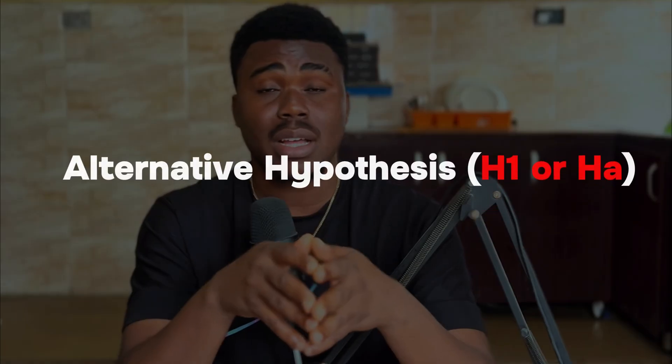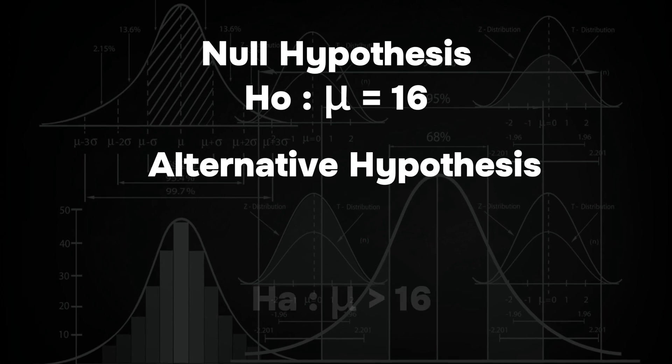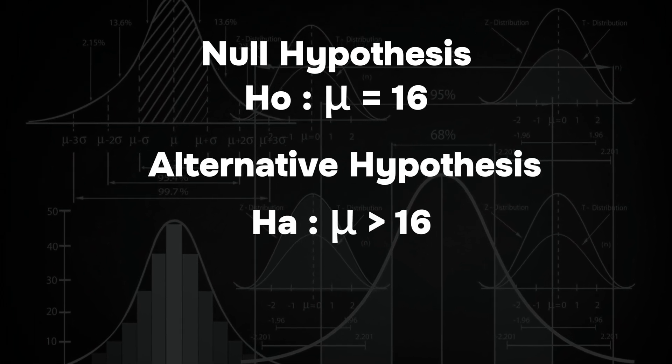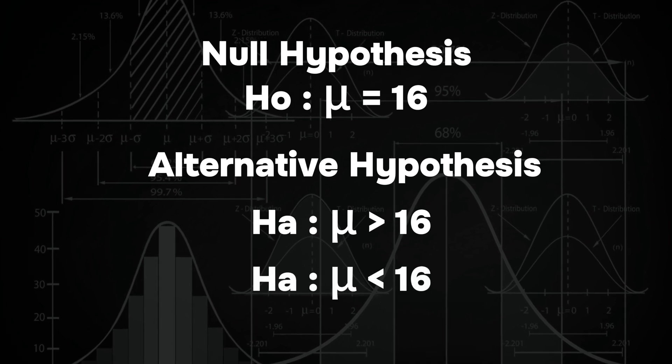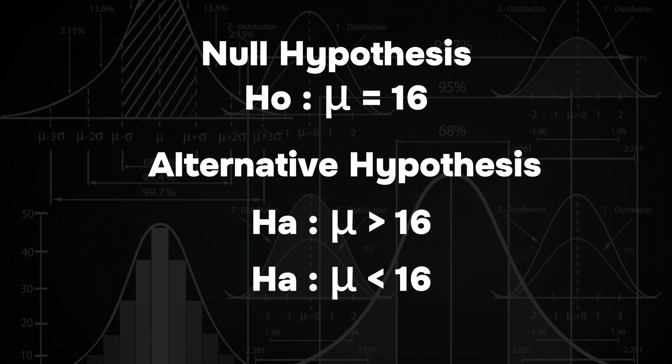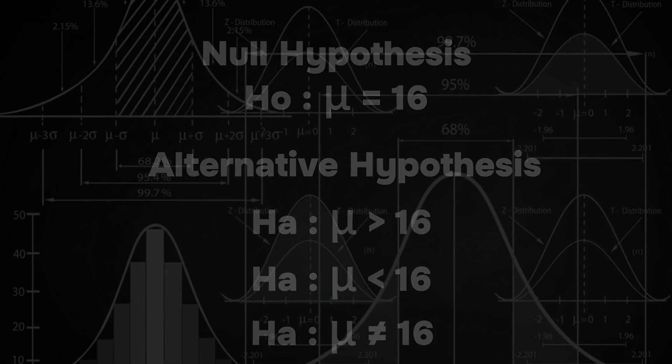On the flip side, we have the alternative hypothesis — this is the statement that always goes against the null hypothesis. Going back to the example, if the null hypothesis states that the average age of students is 16 years (H₀: μ = 16), then the alternative hypothesis is denoted using H₁ or Hₐ. Our alternative can be: H₁: μ > 16 (the average age is more than 16), or H₁: μ < 16 (the average age is less than 16), or H₁: μ ≠ 16 (the age can be more than or less than 16).